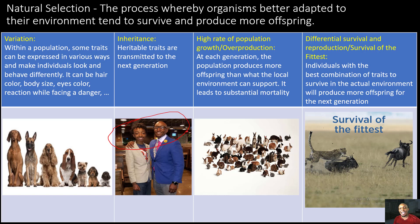The third key principle is a high rate of population growth, or overproduction. At each generation, the population produces more offspring than what the local environment can support, which leads to substantial mortality. So when we say survival of the fittest, some of these organisms — some of these rabbits — are not going to make it. The ones that are best suited for the environment will have their traits passed on to the next generation.